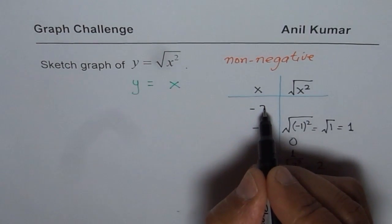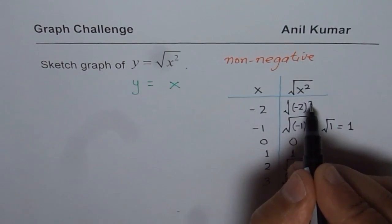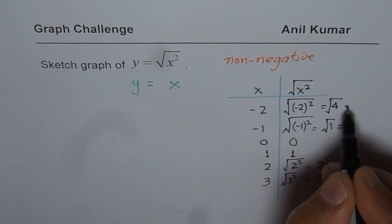If I do square root of minus 2, then also I get minus 2 squared, which is 4, right? And square root of 4, you know, is 2.